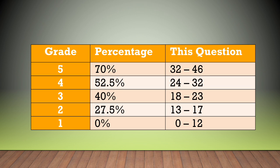There are 46 points available for this question. There is no exact formula for what number of points will constitute a 5, 4, 3, 2, or 1 on the AP exam. However, the percentages used here are based upon past exams released by the College Board. It is recommended that you do a number of the Super Free Response Questions in this series, then combine your results, total your points, and use these percentages to get a feel for how you will do on the AP exam — and more importantly, what concepts you need to strengthen to improve your score.